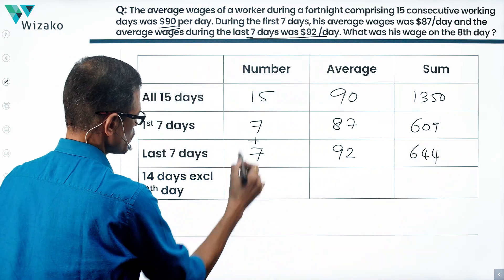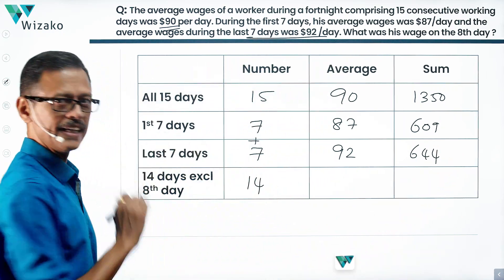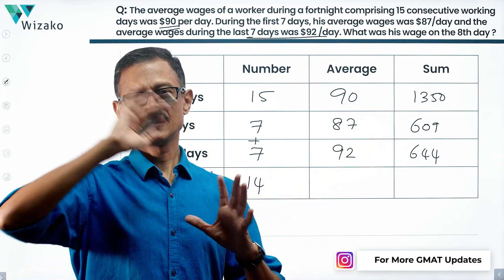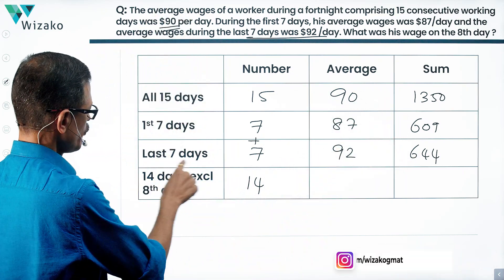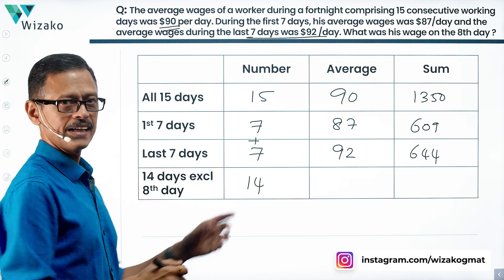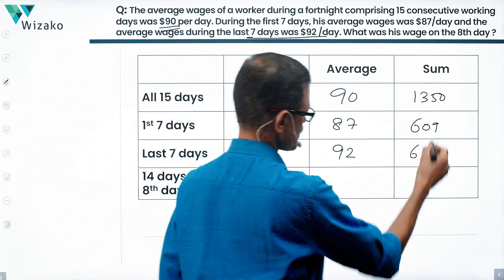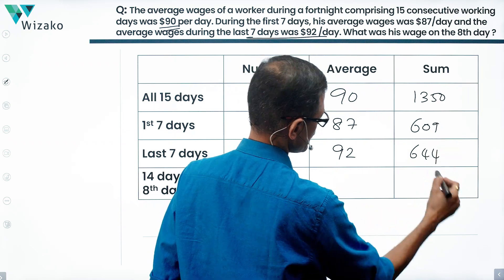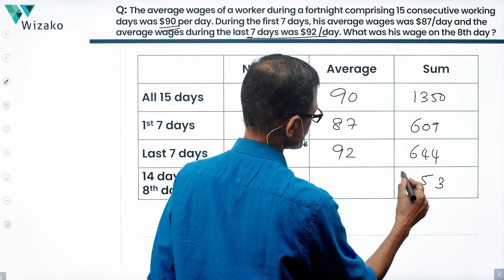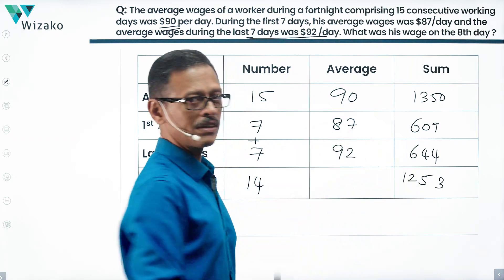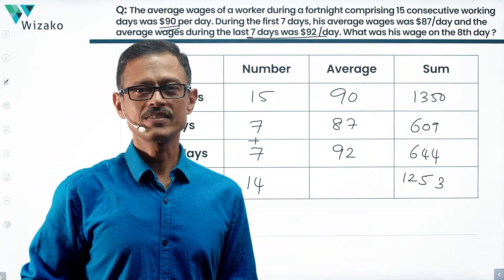So if I add these two, we have wages for 14 days. First seven, last seven. The eighth day alone is missing, right? 14 days, excluding the eighth day, will be a total of 14 days. We'll look at the sum. Four nines are 13, 5, and this is 12. So sum of the wages for 14 out of these 15 days is $1253.